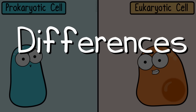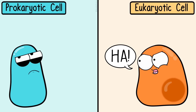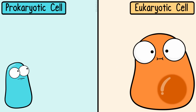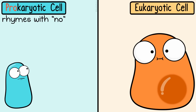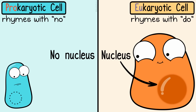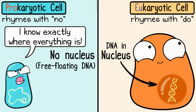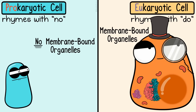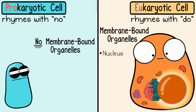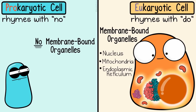What makes prokaryotic cells and eukaryotic cells different is especially interesting. Eukaryotic cells are more complex than prokaryotic cells and tend to be larger. To help remember the differences, pro in prokaryote rhymes with no and eu in eukaryote rhymes with do. Prokaryotic cells have no nucleus to contain their DNA — their DNA is not contained within a nucleus. They also have no membrane-bound organelles; membrane-bound organelles are fancy organelles that have their own membrane, like the nucleus, mitochondria, the endoplasmic reticulum, and the Golgi apparatus.